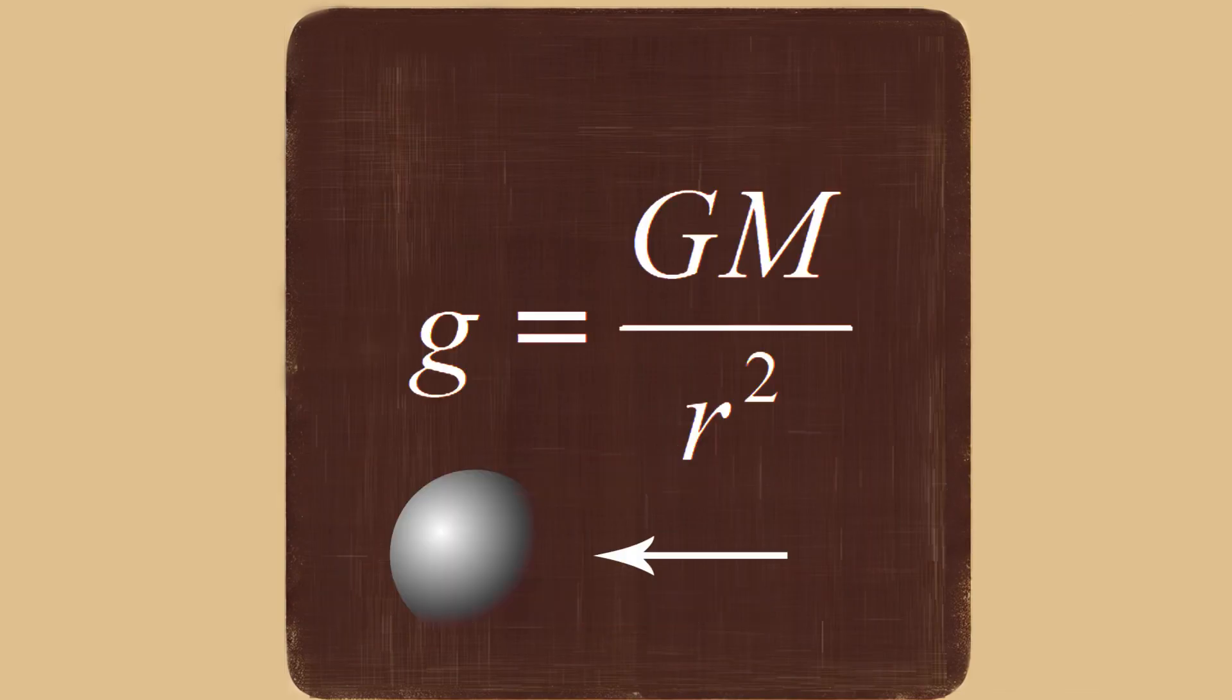We begin with the Newtonian equation for gravitational acceleration. This is before general relativity. I just want to lay the groundwork. This is the gravitational acceleration equation. g is the gravitational acceleration, that's the lowercase g. The uppercase G is the gravitational constant, which is like 6.67 times 10 to the negative 11. And then M is the mass of the object. We have a ball in this example, so it's the mass of the gray ball divided by the radius of the gray ball squared.